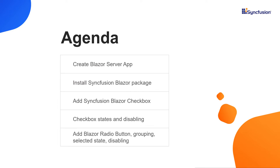In this video I will explain how to create a Blazor application and add the Syncfusion Blazor package. Then I will show you how to add the Syncfusion Blazor checkbox component to a Blazor server application. After creating a checkbox, I will explain how to show a checkbox in checked and intermediate states and explain how to disable it. After that I will create a radio button, explain how to group radio buttons, show a radio button in a selected state, and finally how to disable a radio button.